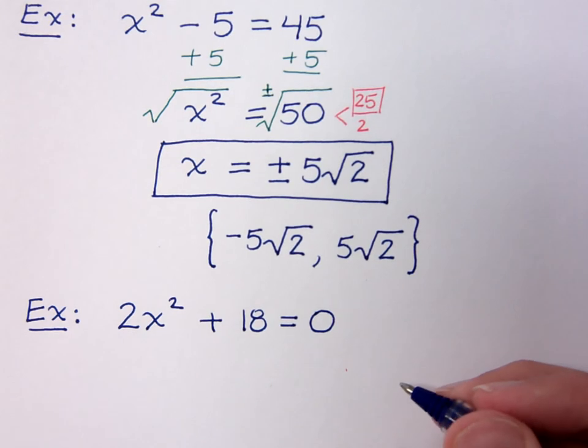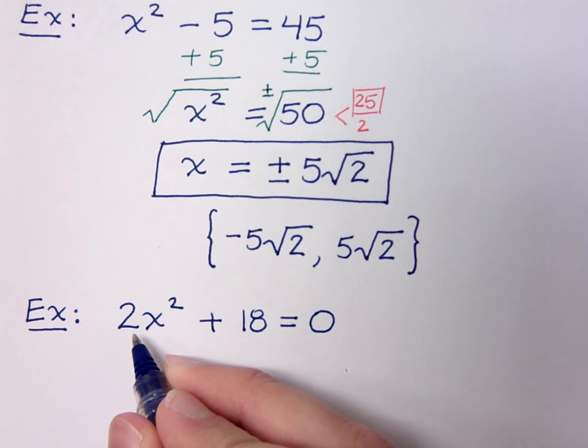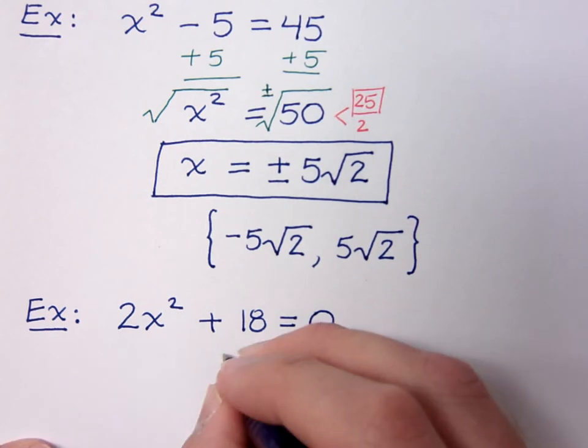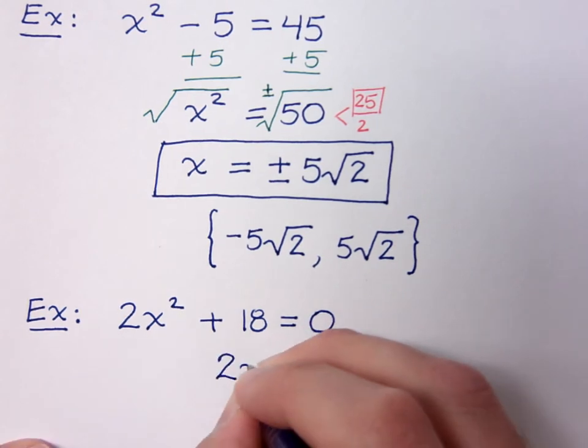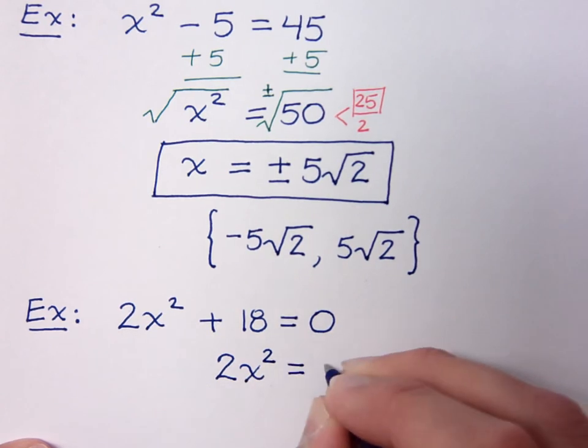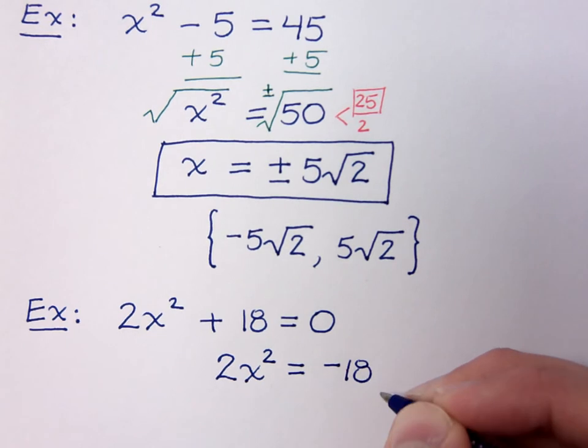Now according to the steps we already wrote, we said the first step is to isolate the square. So your square is this guy right here. It's the x squared. Notice that the 2 is a coefficient. He is not being squared. So you need to get this x squared totally by itself. Now I hope that we can do this without actually showing every single little step. So 2x squared equals negative 18.